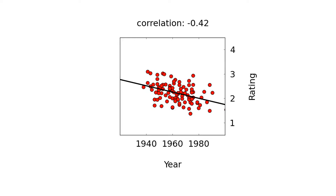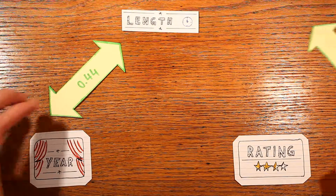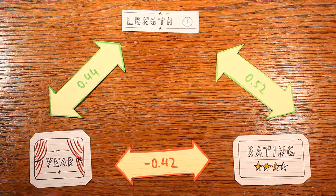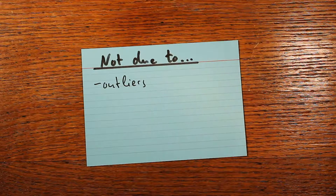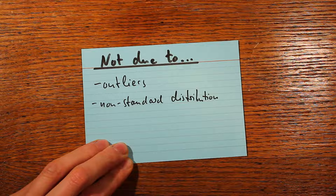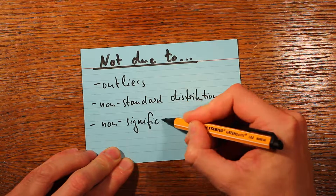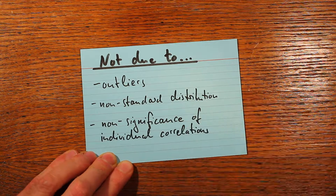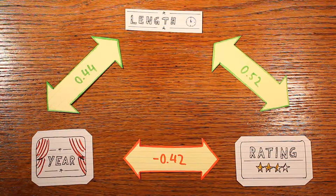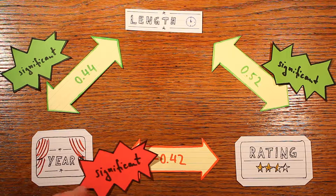While some correlations in the real-life dataset were small — the negative one was just minus 0.15 — in this synthetic dataset all three correlations are considerable: 0.44, 0.52, and the paradoxical negative one at minus 0.42. You might think you need a weird non-standard distribution to get this effect, but that's not true — you can generate this paradox from a normal distribution. Or maybe you thought it's a matter of statistical significance and these results aren't actually significant, but that's not true either. All three correlations — both positive ones and the negative one between release year and rating — are statistically significant.